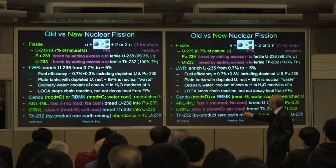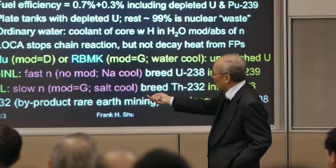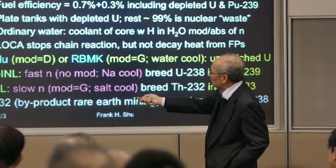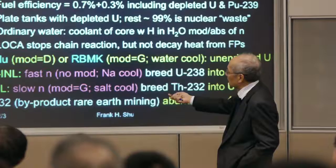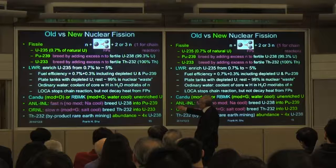But there's another cycle that China and India are very interested in, because neither country has uranium but both have thorium. Thorium has only one isotope: thorium-232. If you add a neutron to thorium-232, you get thorium-233, then two beta decays give you uranium-233, which is fissile. That's 100% of thorium available as a resource.